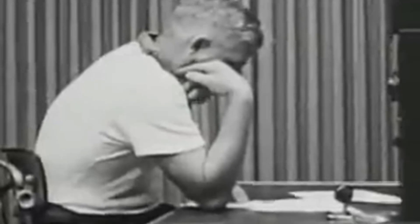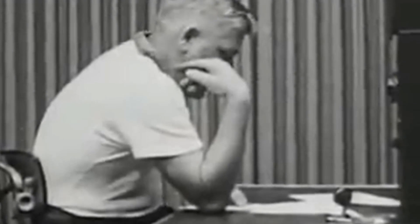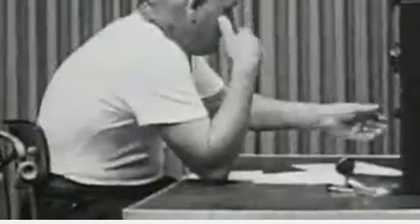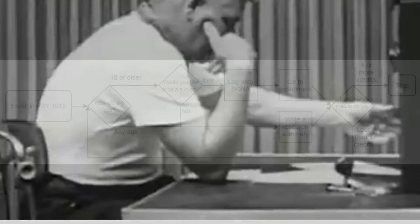Students participate in research approved through the University Ethics Board as subjects rather than as experimenters. There is no extra lab to sign up for. You simply learn about psychological research from participating as a subject rather than as an experimenter. To understand how the research experimentation process follows, let's take a look at this flowchart.